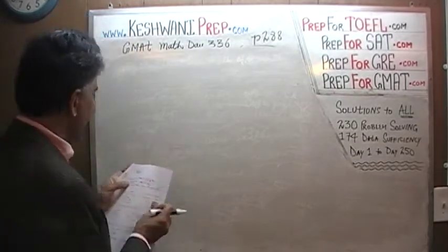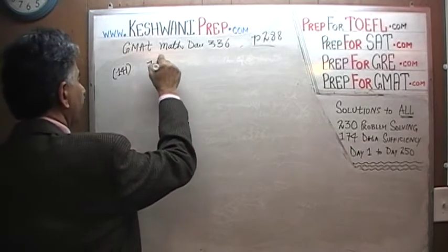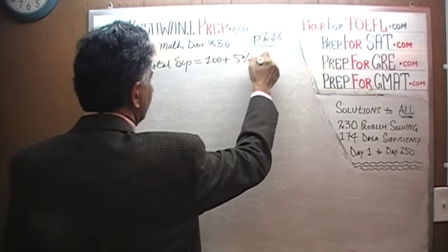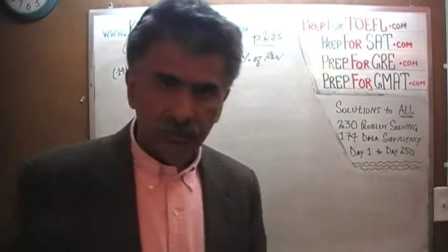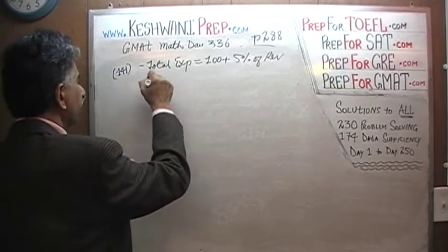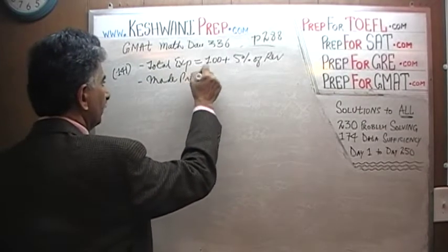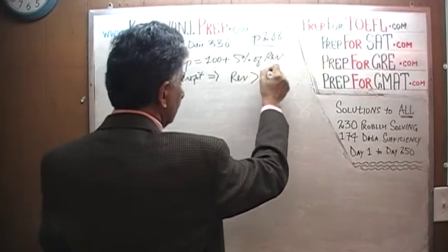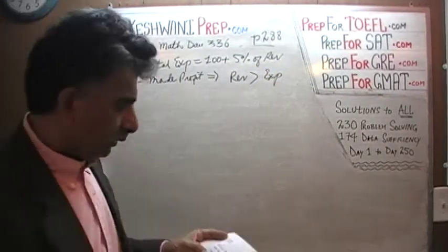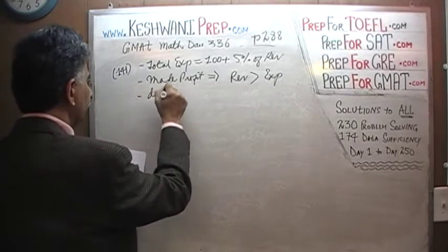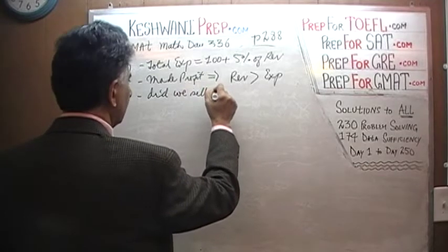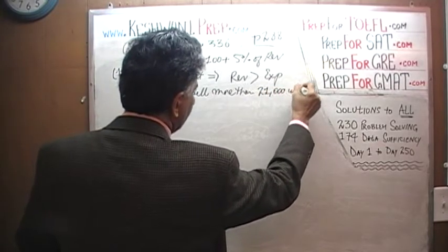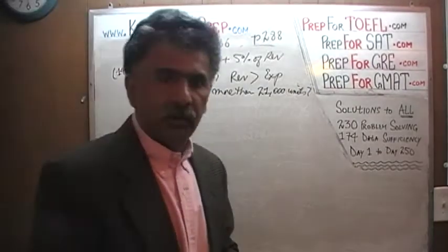Number 141 tells us that our total expenditure equals $100,000 plus 5% of revenue. We are also told that the company made a profit, which implies that their revenue must have been more than their expenses. The question is: did we sell more than 21,000 units? Very straightforward, very simple.